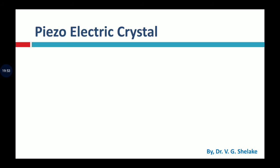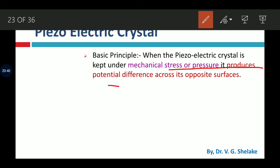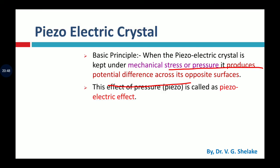The next transducer is the piezoelectric crystal transducer. The piezoelectric property: in nature there are some materials called piezoelectric materials. When pressure is applied on a piezoelectric material, an equivalent voltage is developed across its two opposite surfaces — this is called the piezoelectric effect. The basic principle is that when a piezoelectric crystal is kept under mechanical stress or pressure, it produces a potential difference across its opposite surfaces.